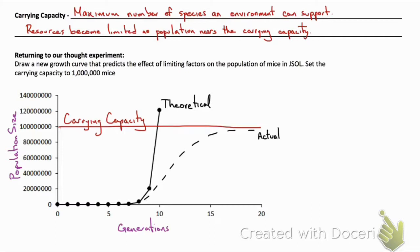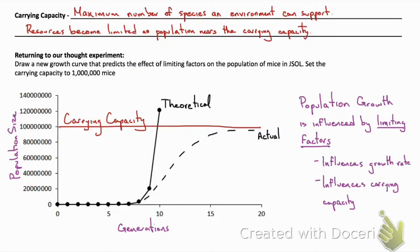In conclusion, what we've talked about is population growth and how population growth can be influenced by limiting factors. These limiting factors not only influence the rate of growth but also influence the carrying capacity.